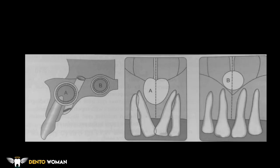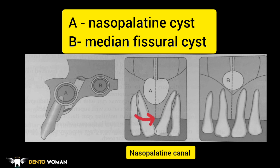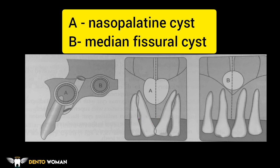Here is the schematic representation of the nasopalatine cyst and median fissural cyst. The nasopalatine cyst is developmental in origin and arises in the nasopalatine canal when embryonic epithelial remnants of the nasopalatine duct undergo proliferation and cystic degeneration. It is found in the nasopalatine foramen or canal. If it extends posteriorly to involve the hard palate it is called the median palatine cyst; if it extends anteriorly between the centrals, destroying and expanding the labial plate and causing the teeth to diverge, it is called the median anterior maxillary cyst. It presents as a well-defined corticated circular or oval radiolucency.